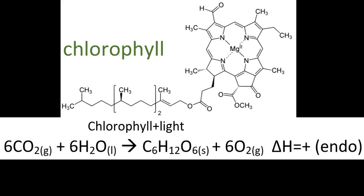Chlorophyll absorbs visible light and ejects an electron. Six carbon dioxide and six water molecules can be combined to form C₆H₁₂O₆, which is glucose. Glucose is the building block for cellulose, starch, and other main components of plants, and also produces the oxygen that we breathe. This is an endothermic reaction and is an excellent way for carbon dioxide to be removed from the atmosphere.